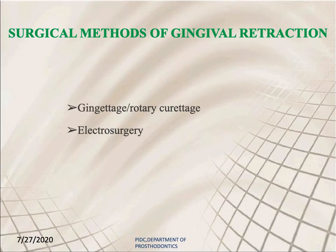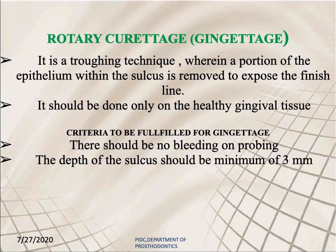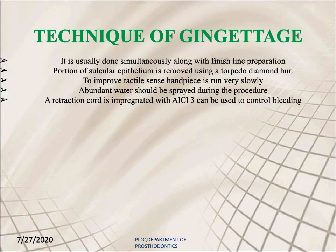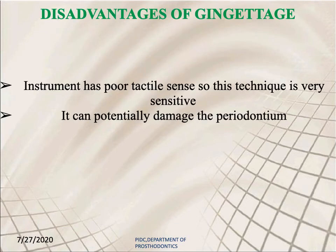Surgical methods of gingival retraction include gingivage and electrosurgery. Gingivage is done by rotary curettage; it is a troughing technique wherein a portion of the epithelium within the sulcus is removed to expose the finish line, and should be done only on healthy gingival tissue. Criteria include no bleeding on probing and a minimum sulcus depth of 3 mm. The technique is done simultaneously with finish line preparation using a torpedo diamond bur, running very slowly with abundant water spray. A retraction cord impregnated with aluminum chloride can be used to control bleeding.